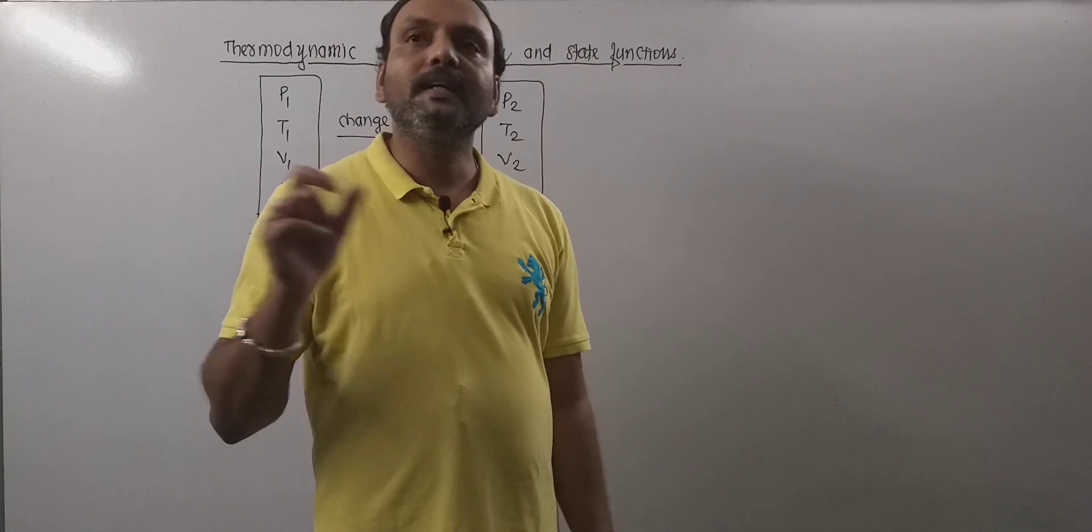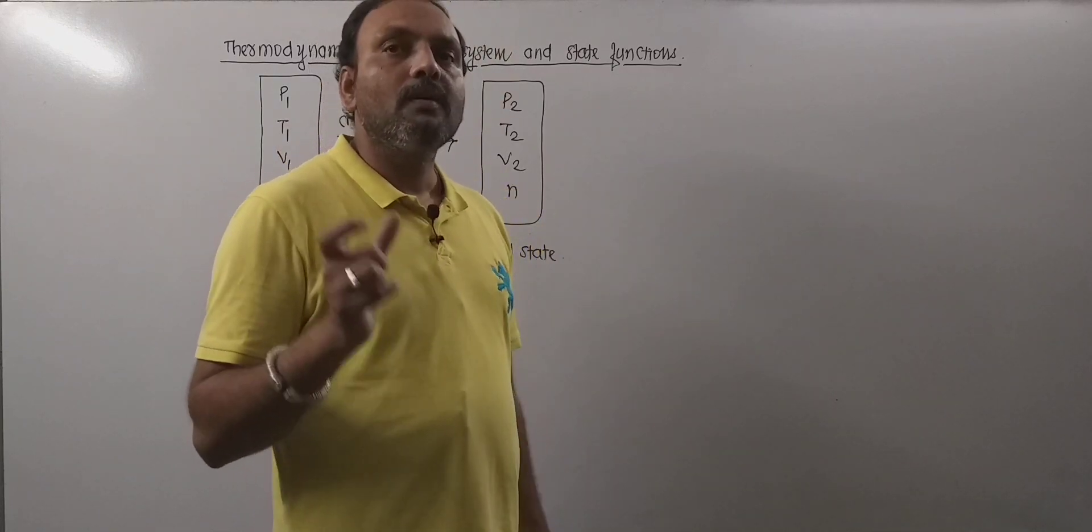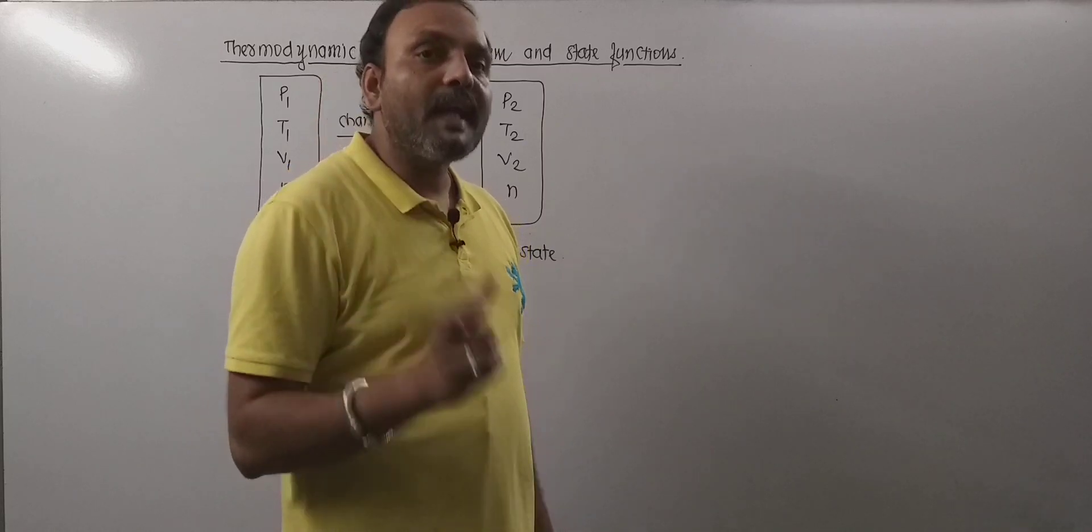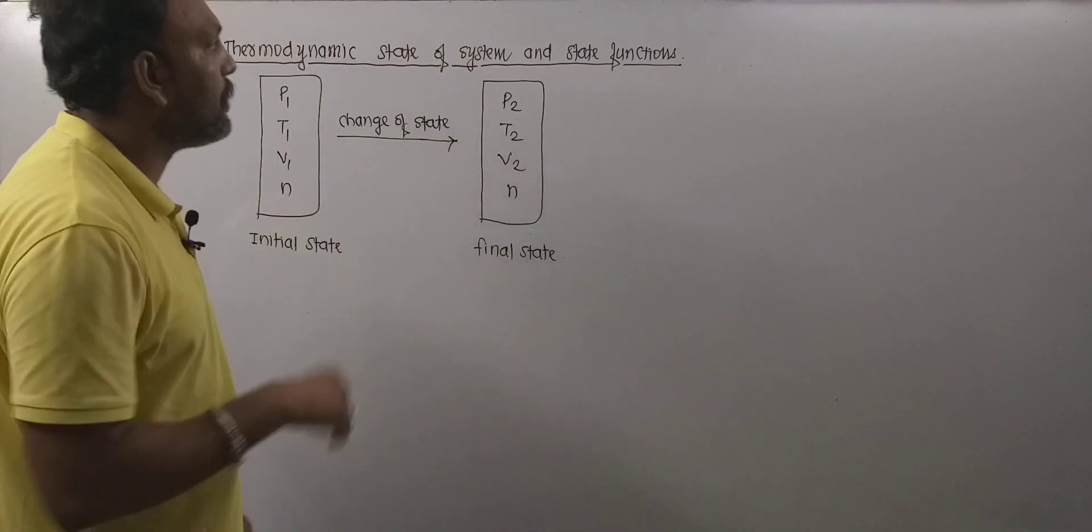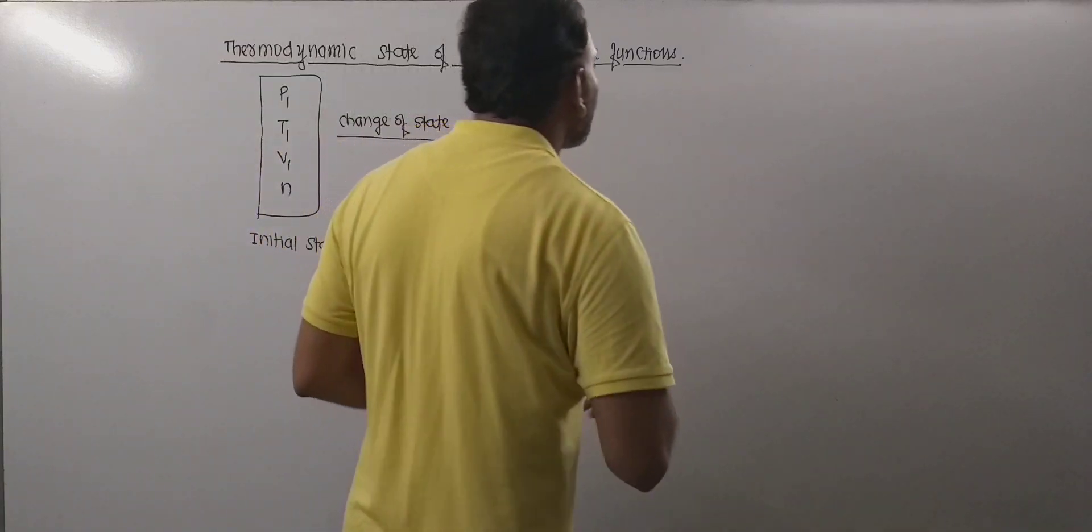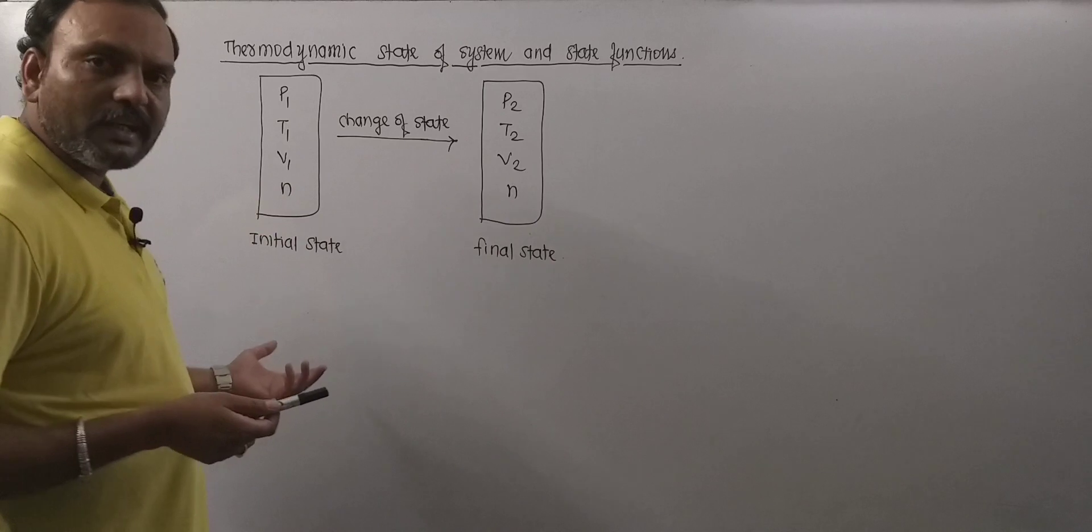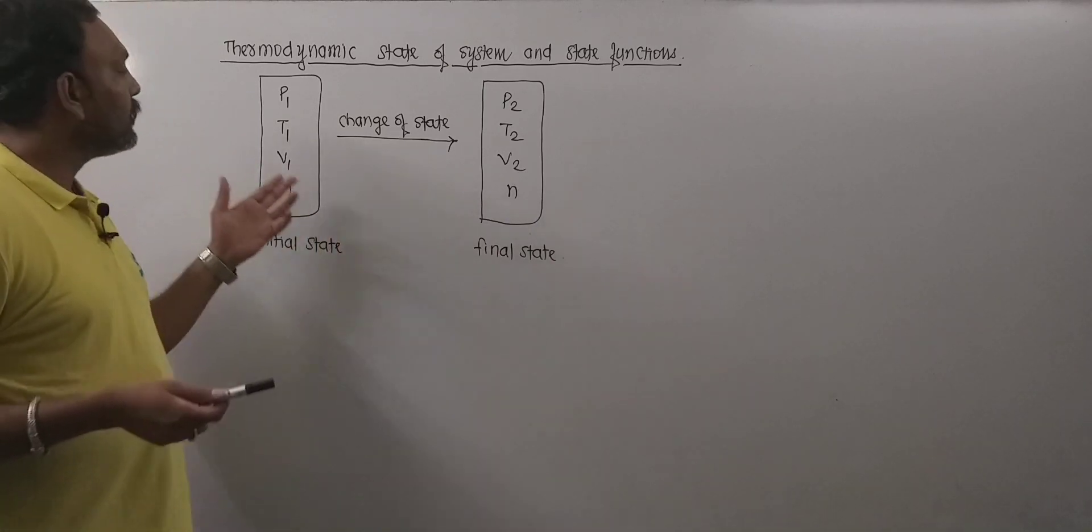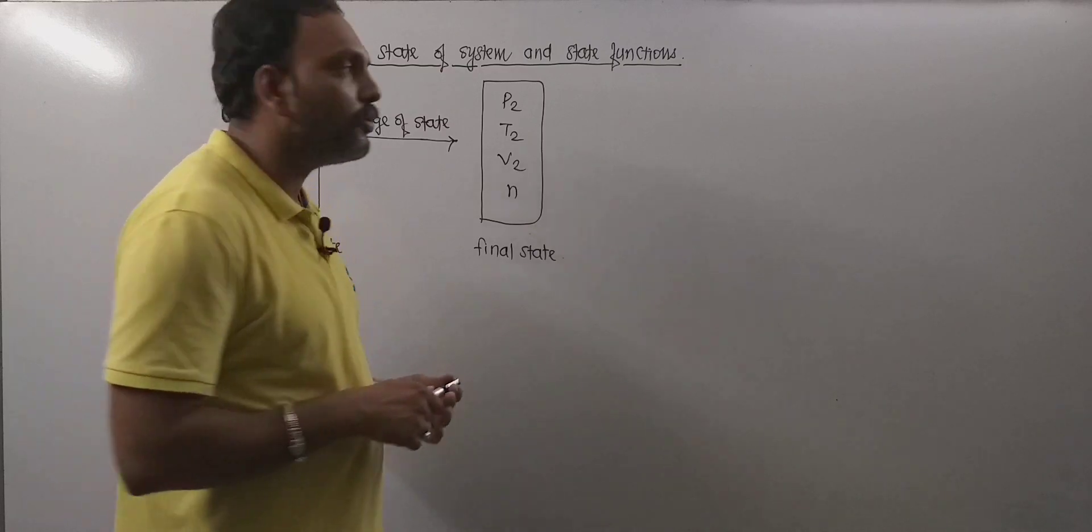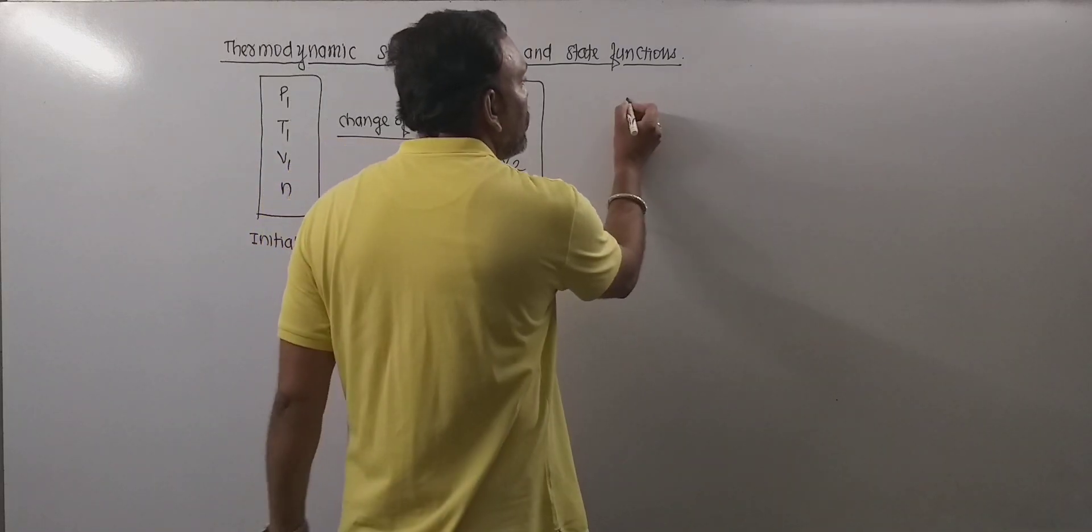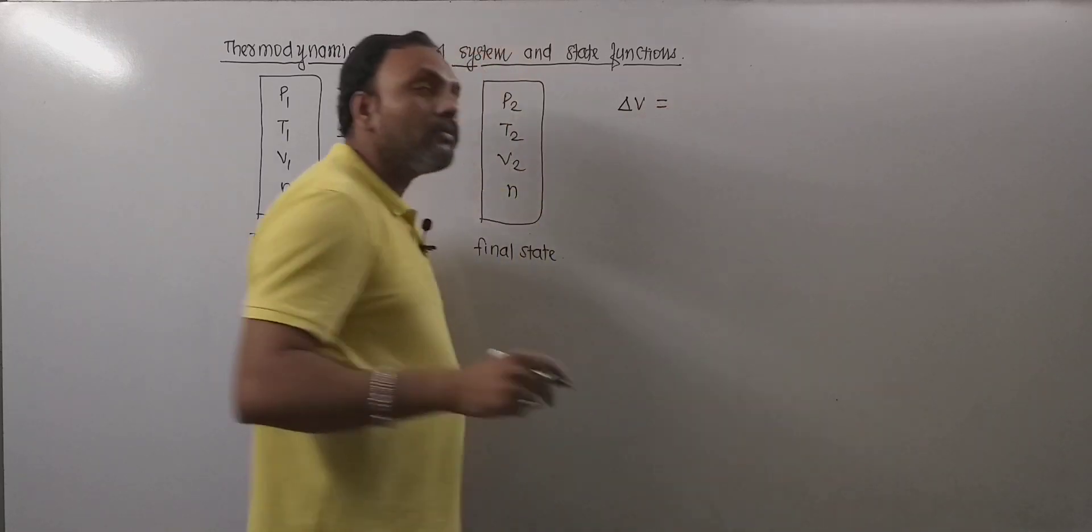Now, what are state functions? State functions are the functions whose value depends on the state, not on the path followed by the system. For example, volume is a state function. Suppose in initial state, volume of system is v1, and in final state it is v2.